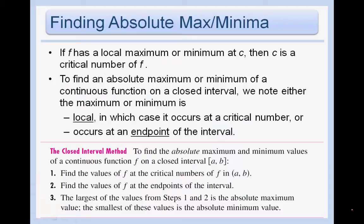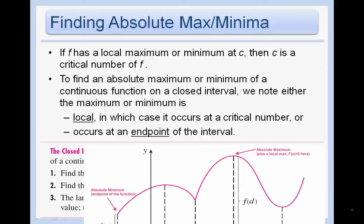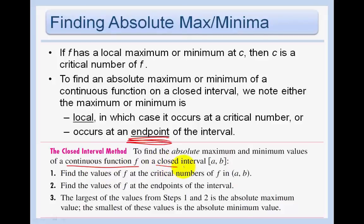To find an absolute max or min of a continuous function on a closed interval: either the maximum or minimum is local, occurring at a critical number, or it occurs at an endpoint. So when finding absolute max and min, we must check both our critical values and our endpoints. The largest of these y-values will be the absolute maximum and the smallest will be the absolute minimum.